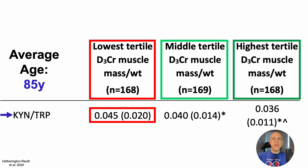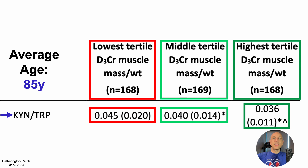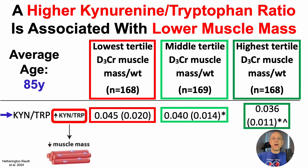The group that had an intermediate level of muscle mass to body weight ratio had a lower kynurenine to tryptophan ratio, and the group that had the highest muscle mass had the lowest kynurenine to tryptophan ratio. So from this study, we can see that a higher kynurenine to tryptophan ratio is associated with lower muscle mass, and conversely, a lower kynurenine to tryptophan ratio is associated with higher levels of muscle mass.